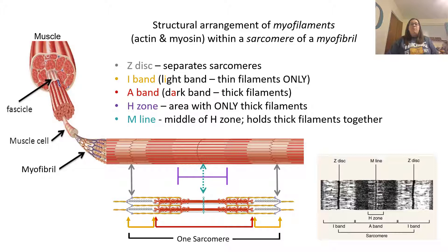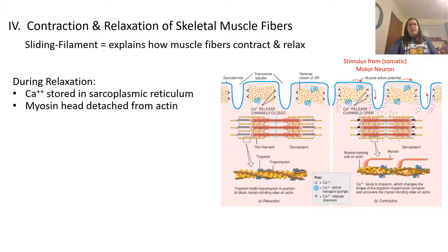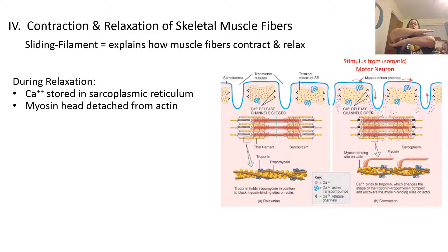Now let's talk about contraction and relaxation of muscle fibers — how the sarcomere actually works. The sarcomere works using what we call the sliding filament model, which explains how muscle fibers contract and relax. In the sarcomere, the thin and thick filaments have some overlap, and they move over each other and overlap more when the muscle contracts, shortening the muscle as a whole. The filaments themselves don't get shorter — just the space between them does. Then it relaxes and comes back.